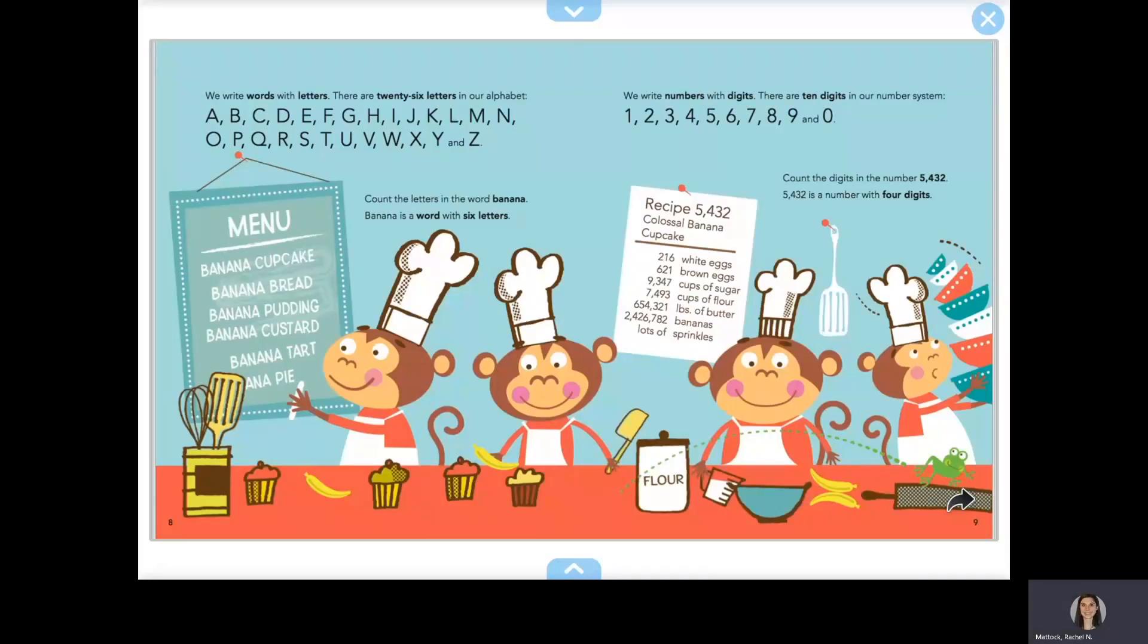We write numbers with digits. There are 10 digits in our number system. Count the digits in the number 5,432. 5,432 is a number with four digits.